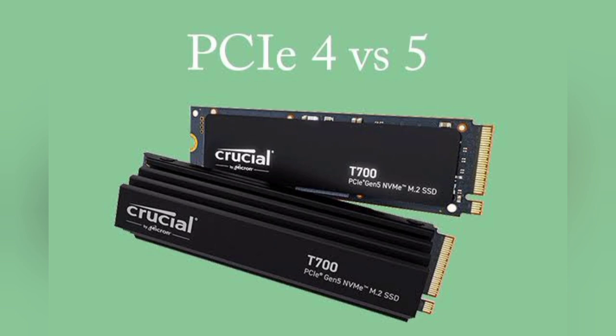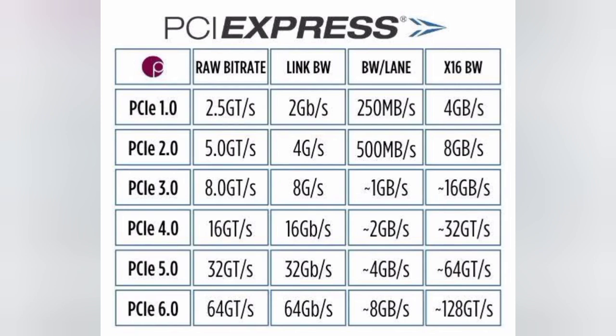PCIe 3.0 had a data transfer rate of 8 giga-transfers per second (GT/s), PCIe 4.0 transfers data at 16 GT/s, and PCIe 5.0 is at 32 GT/s. A key advantage of 12th and 11th gen Intel Core CPUs is the addition of CPU PCIe lanes following the new standards.